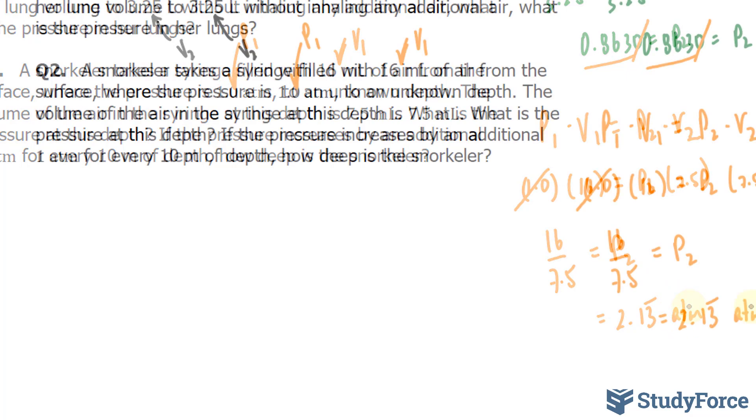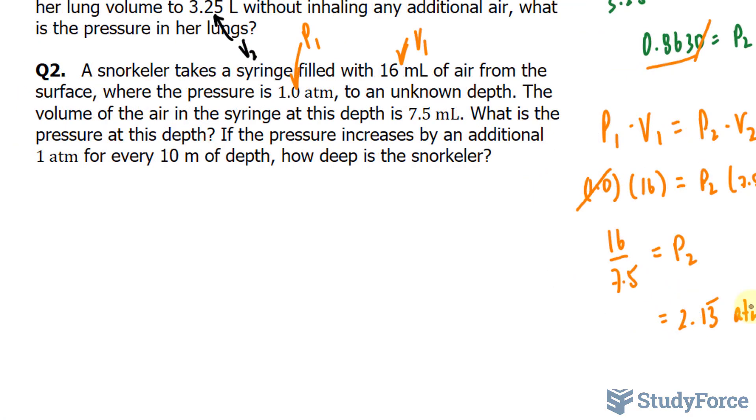Now we're told something else. If the pressure increases by an additional 1 atmosphere for every 10 meters of depth, how deep is the snorkeler? So we're told the rate here, we're told that for every 10 meters that you go down, 1 atmosphere increases. So I'm going to write that down. 1 atmosphere per every 10 meters.